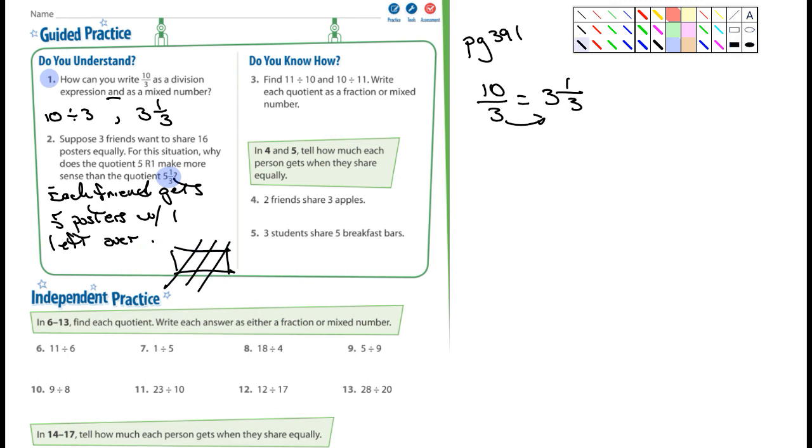Let's see here. Number three. Find 11 divided by 10 and 10 divided by 11. Write each quotient as a fraction or a mixed number. Okay. So actually I'm going to say write them as both. And I'll do the first one here for you. Okay. Oh, well, actually you can't do both as a mixed number. So I take that back. So one of these will be a mixed number and one can be a fraction. So there's two answers I'm looking for here. There's two answers. You're going to put one here and one here. All right. So three you can do. Four, you can do. Let's see, tell how much each person gets as they share equally. Yeah. You guys can do that. Five.